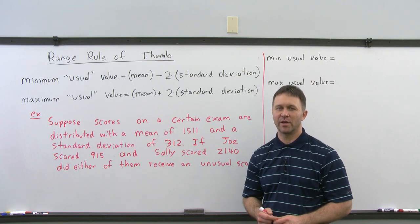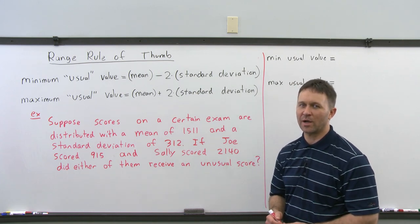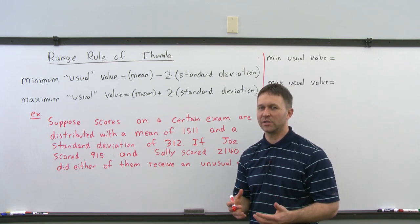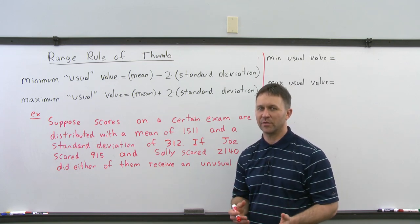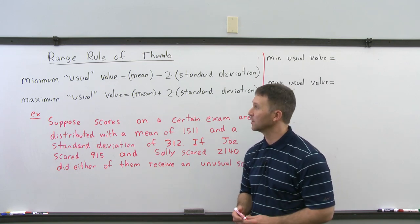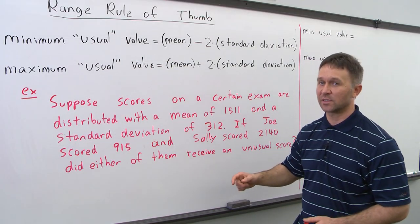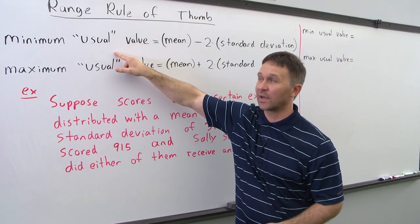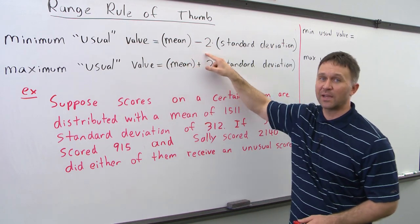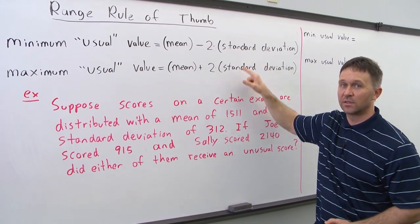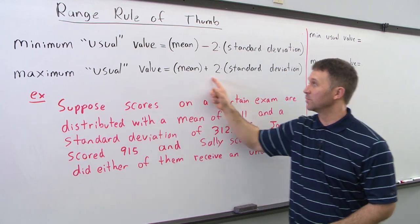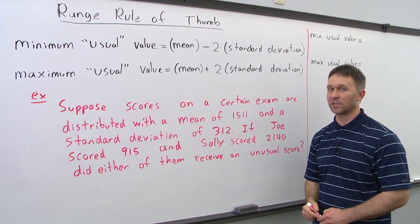In this example we're going to talk about the range rule of thumb. The range rule of thumb applies when you're given a set of values and you're given the mean and the standard deviation for that set. The minimum usual value is the mean minus two times the standard deviation, and the maximum usual value is the mean plus two times the standard deviation.